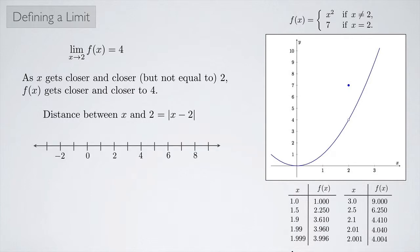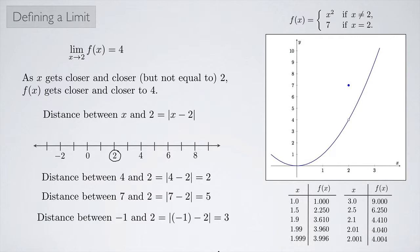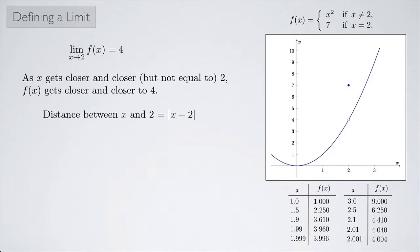On a number line with 2 at center: the distance between 4 and 2 is 2 units, and |4 − 2| = 2. The distance between 7 and 2 is 5 units, and |7 − 2| = 5. The distance between −1 and 2 is 3 units, and |−1 − 2| = 3. In general, the distance between any number x and 2 is |x − 2|. Similarly, the distance between f(x) and 4 is |f(x) − 4|.